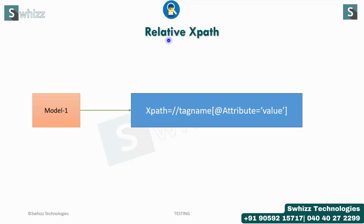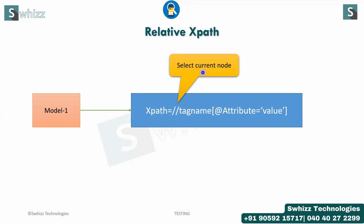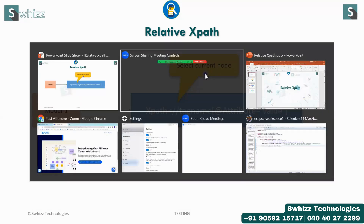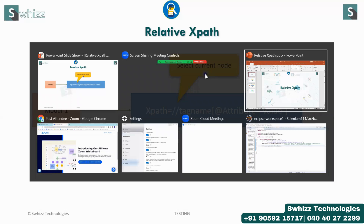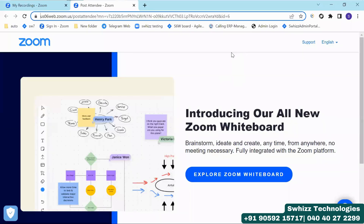First of all, to make Selenium understand this is a relative XPath, you have to start your syntax with two forward slashes. So what do these two forward slashes represent? This represents selecting the current node. What is this current node? Let's move on to a particular site to understand about this current node.